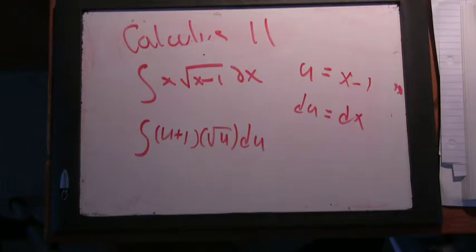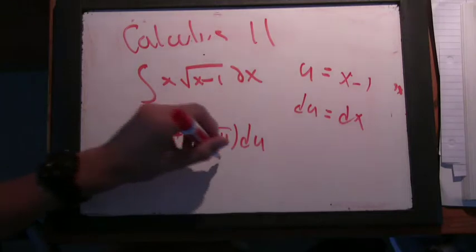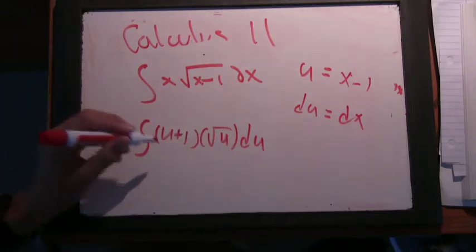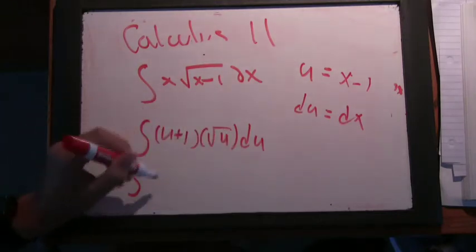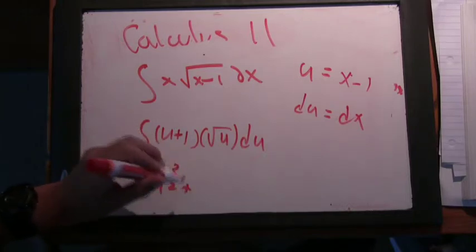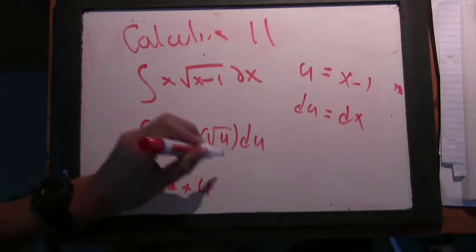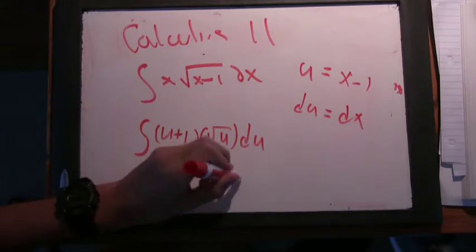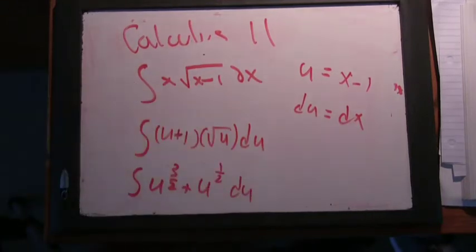So how would you proceed now? Well, now we can multiply this out, and we have u to the 3 halves plus u to the 1 half du, which is easier to deal with.